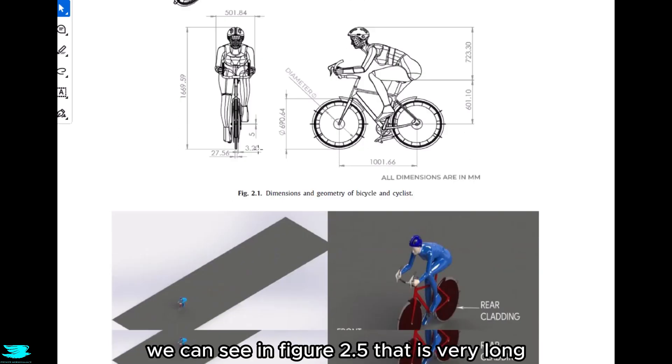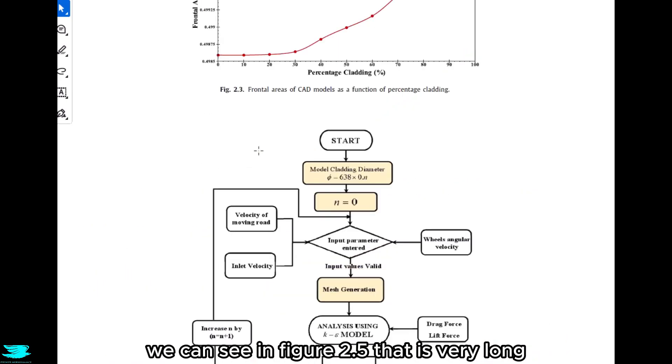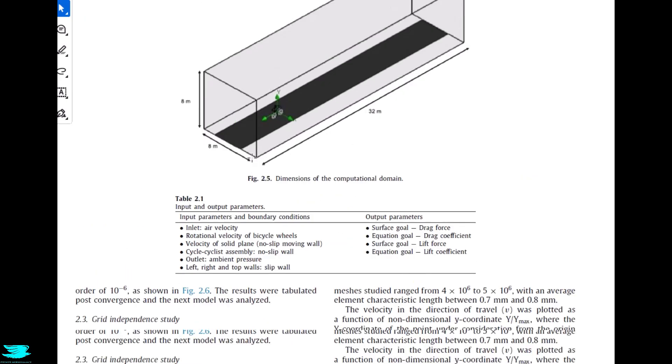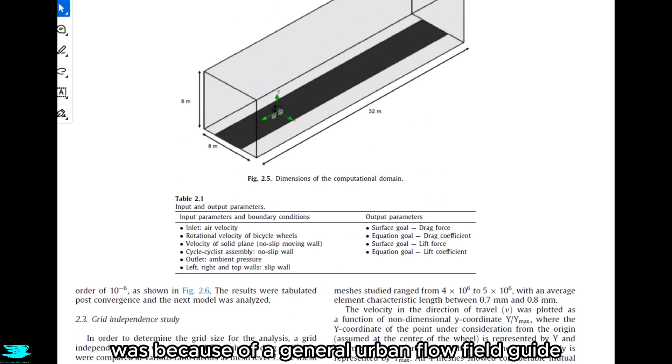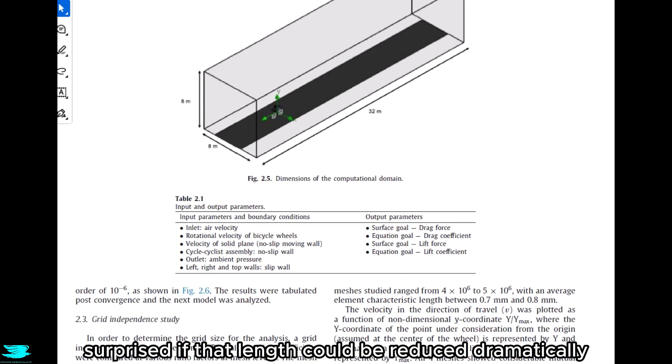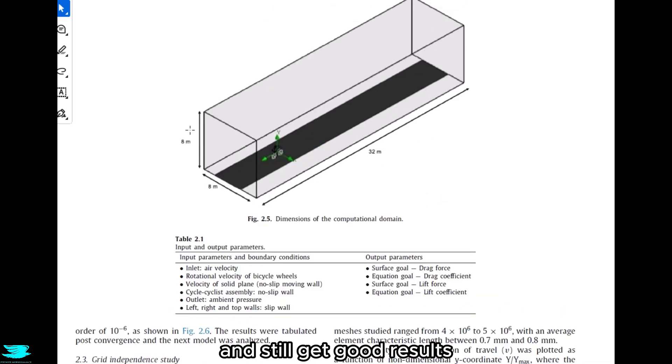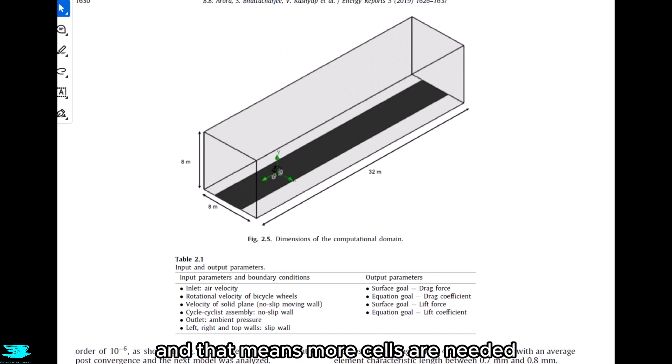And for the computational domain, we can see in figure 2.5 that it is very long. The length chosen was because of a general urban flow field guide suggesting that that length here would be good. But I wouldn't be surprised if that length could be reduced dramatically and still get good results. The length is very long, and that means more cells are needed. That means it takes longer to do the simulation.